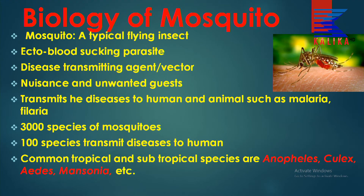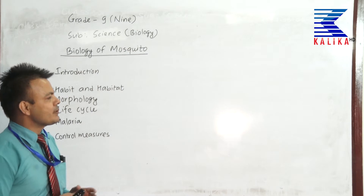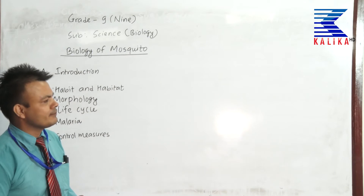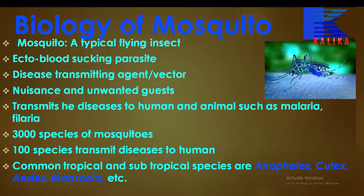As shown in the diagram on the right, there is a mosquito which is sucking blood. The mosquito is a disease-transmitting agent or vector — it transmits disease. It is a nuisance and unwanted guest of the house, giving problems and irritations. They are unwanted guests that transmit diseases to humans and animals such as malaria, filaria, and many more. There are altogether 3,000 species of mosquitoes identified so far and 100 of them are responsible for transmitting disease to human beings as well as animals.